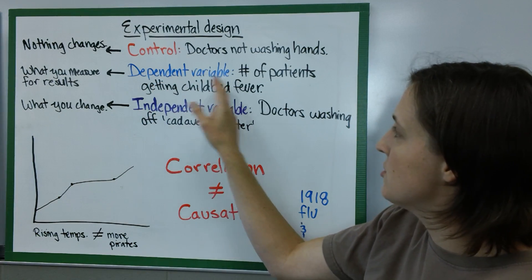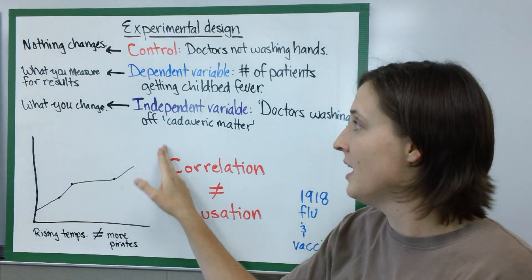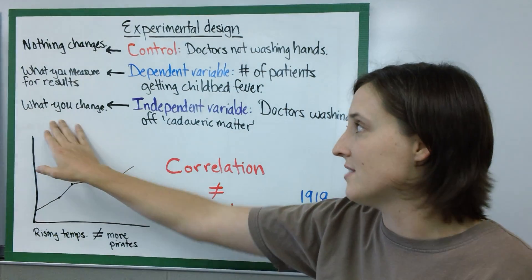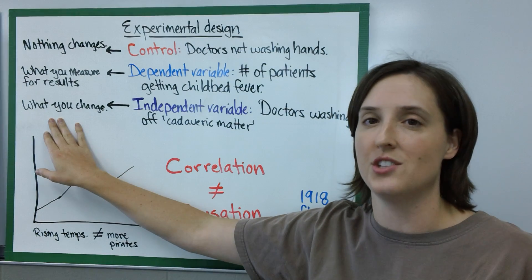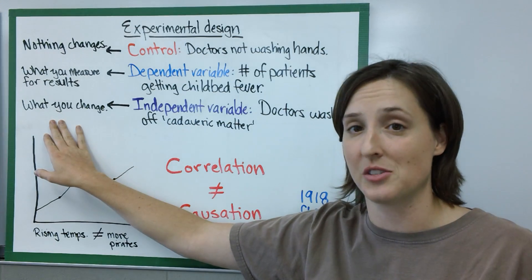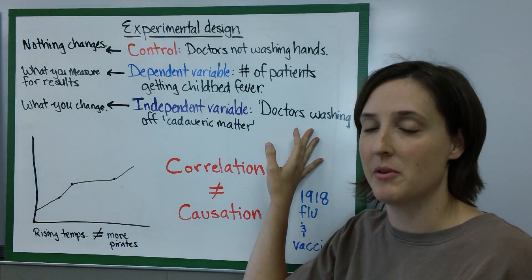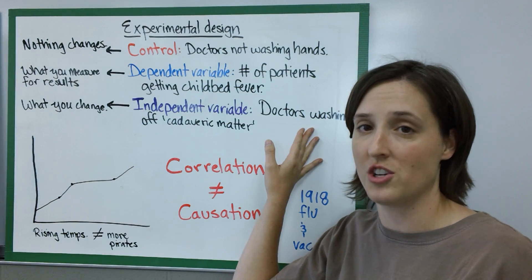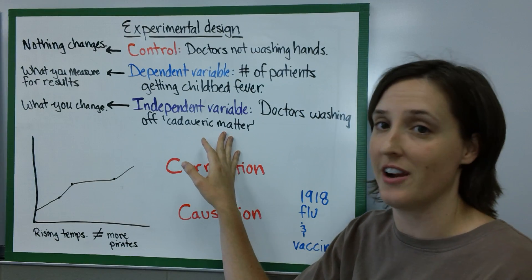Then he had two kinds of variables: an independent variable and a dependent variable. The independent variable is something that as an experimenter and scientist you change. If I'm growing plants I can change the amount of water I give them or the amount of sunlight they're exposed to. In this experiment he decided he was going to change whether doctors wash their hands or not. He had the doctors wash their hands of cadaveric matter.